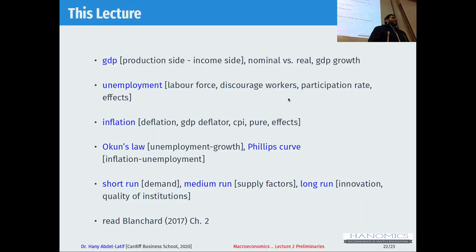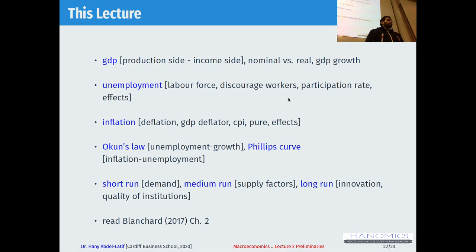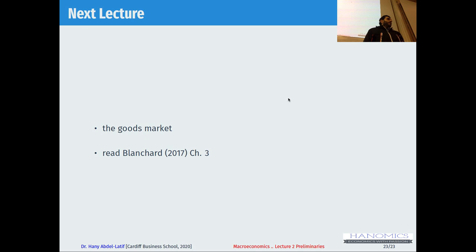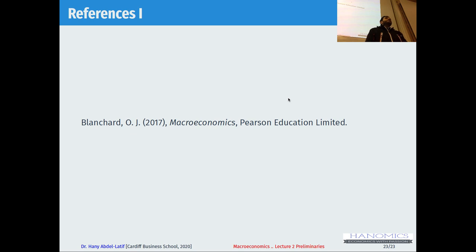So what's next? In this lecture we talked about GDP, unemployment, inflation, Okun's Law, the Phillips Curve, and the timeframe roadmap. Next lecture we'll talk about the goods markets. Please read chapter three for the next lecture.